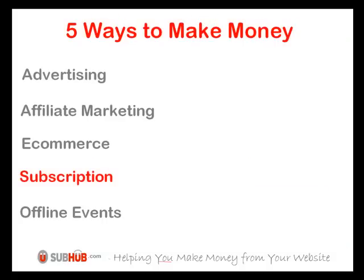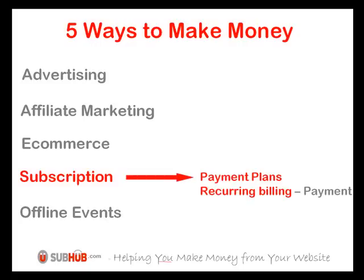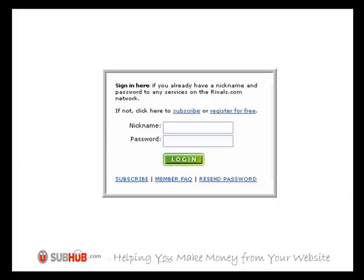To allow subscription publishing, you need several important pieces of functionality. You need to be able to create payment plans — for example, giving clients a chance to sign up for a monthly, quarterly, or annual subscription. You need to be able to take recurring payments, for example taking $4.95 on the first day of every month for a period of 12 months. And you need to be able to automatically issue login and password details and automatically monitor them so that when they run out, they're disabled. The whole login and password solution must be very secure to prevent hackers reaching the premium content without paying.